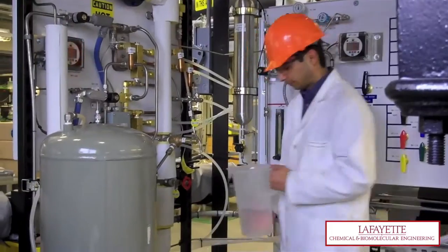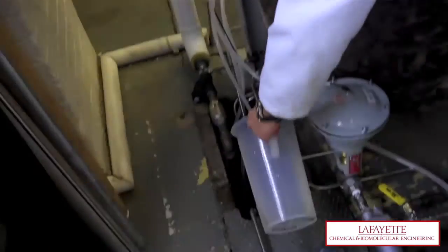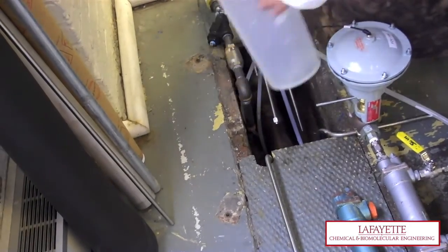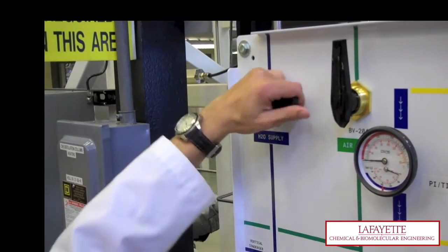Close BV125 and empty the container into the drain behind the kettle reboiler. Ensure that BV125 is closed before opening BV203.